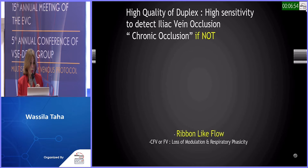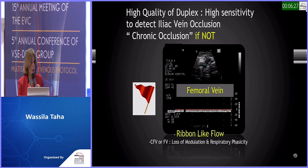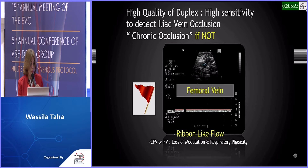Even with provocative maneuvers like Valsalva or low velocity scale, it remains a thread-like flow with collaterals. So if you don't have high-quality duplex and need a predictor for iliac vein obstruction, look at the femoral vein itself. Comparing with the contralateral side, if you have ribbon-like flow and loss of phasicity or modulation of respiratory phasicity, this is a strong predictor of ipsilateral significant stenosis or iliac vein occlusion.